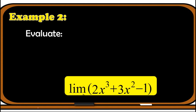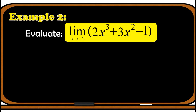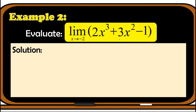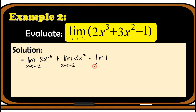Let's have another example. Evaluate the limit of the polynomial function 2x cubed plus 3x squared minus 1 as x approaches negative 2. The first thing we can apply is the limit of addition or subtraction. So we now have the limit of 2x cubed plus the limit of 3x squared as x approaches negative 2, minus the limit of 1 as x approaches negative 2. We can apply the limit of a constant multiple.